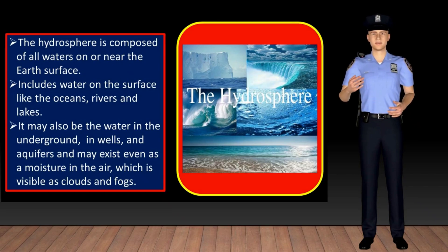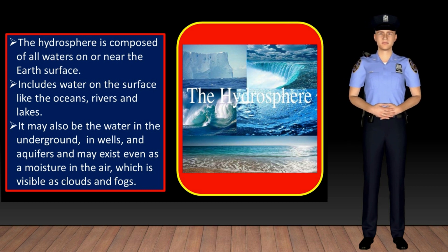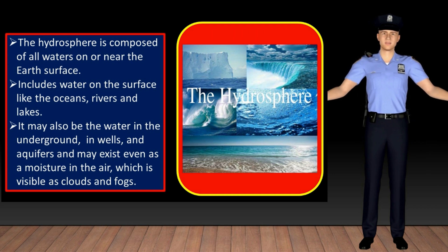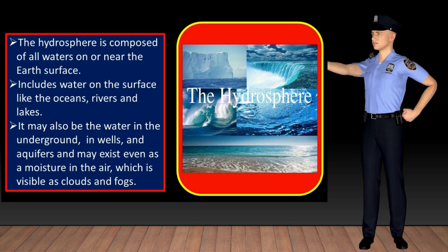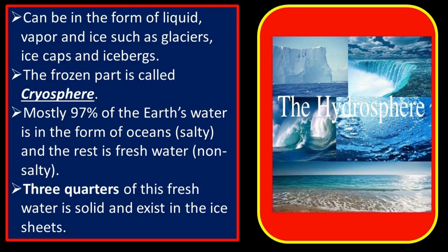Number two, the hydrosphere. The hydrosphere is composed of all waters on or near the Earth's surface. This includes water on the surface like the oceans, rivers and lakes, as well as water underground in wells and aquifers, and moisture in the air visible as clouds and fogs. The hydrosphere can be in the form of liquid, vapor and ice such as glaciers, ice caps and icebergs. The frozen part is called the cryosphere. Mostly 97% of the Earth's water is in the form of oceans or salty water, and three quarters of the remaining fresh water is solid and exists in ice sheets.